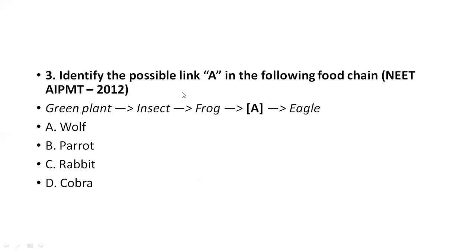Identify the possible link A in the following food chain: green plants are eaten by insects, insects are eaten by frogs, frogs are eaten by snakes, and snakes are eaten by eagles. So which one is the snake here? The answer is cobra. Frogs are eaten by cobra, and cobra is eaten by eagle. The correct answer is cobra.